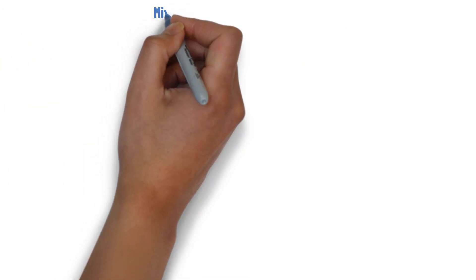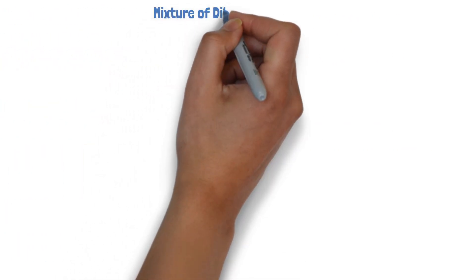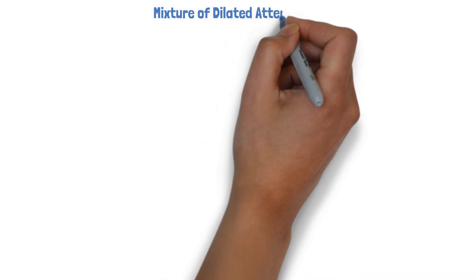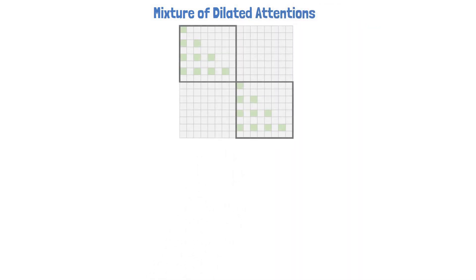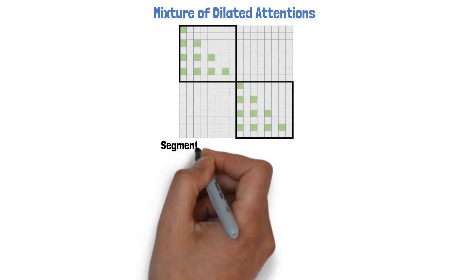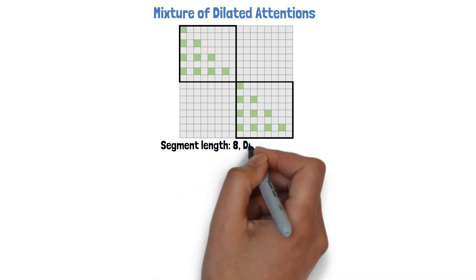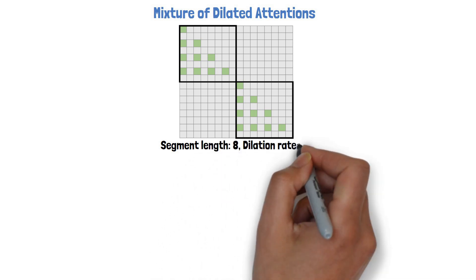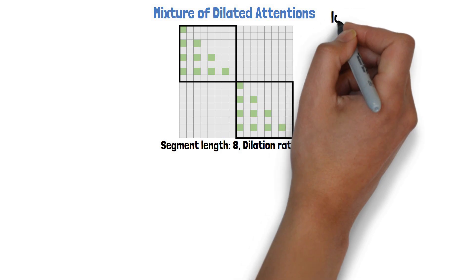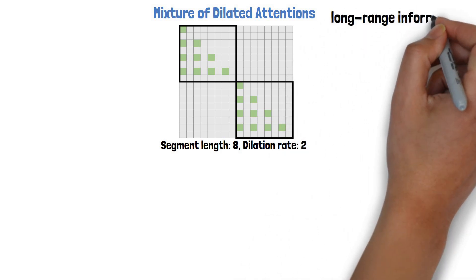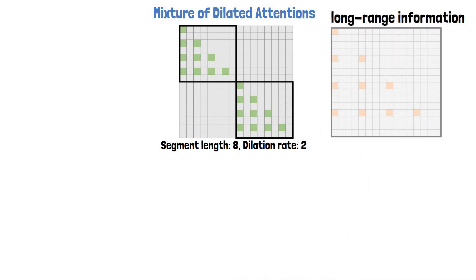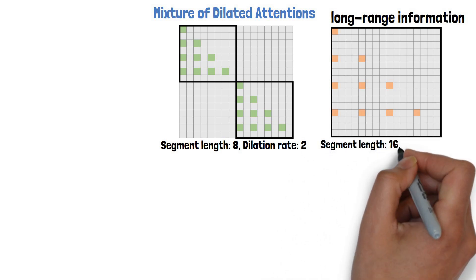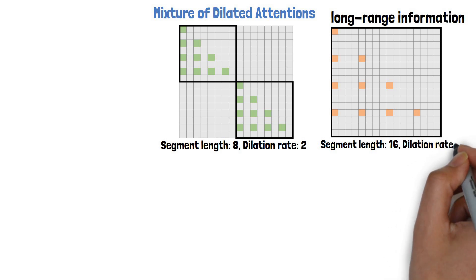You might be asking yourself by now if this approach doesn't lose a lot of information from the context, which brings us to talk about mixture of dilated attentions. Consider this example from the paper of attention matrix for segments of size 16, divided into two segments of size 8 with dilation rate of 2, so every second row is removed. To capture long-range information, they add another dilated attention block with larger segment size and higher dilation rate, like this example with segment size 16 and dilation rate of 4.